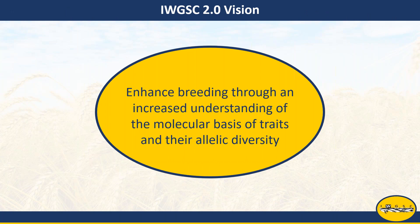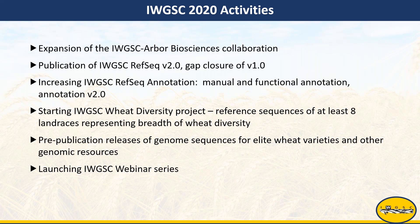As part of the IWGSC 2.0 vision, our goal is to enhance breeding through an increased understanding of the molecular basis of traits and their allelic diversity, and that is part of the reason why we wanted to start a webinar series to begin to advance this vision. Our activities in 2020 include activities related to our vision, including the expansion of the IWGSC Arbor Biosciences collaboration, continued effort on IWGSC RefSeq V2.0 and our annotation, and launching this webinar series.